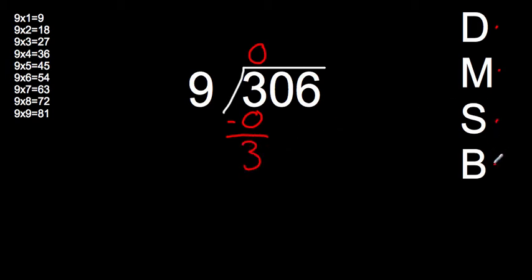My last step is to bring down. I've got to bring down this number over to the right of the 3, which is a 0. So I've got to bring the 0 down, and I get 30. So my new number here is 30.